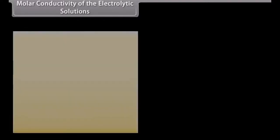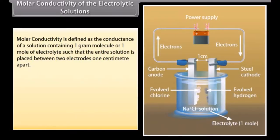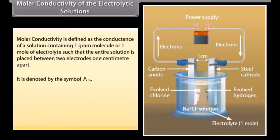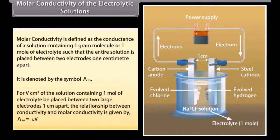Molar conductivity of electrolytic solutions. Molar conductivity is defined as the conductance of a solution containing 1 gram molecule or 1 mole of electrolyte such that the entire solution is placed between 2 electrodes 1 cm apart. It is denoted by the symbol λm. The relationship between conductivity and molar conductivity is given by: λm = κ × V, where V is the volume in cm³ of the solution containing 1 mole of electrolyte.